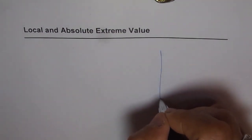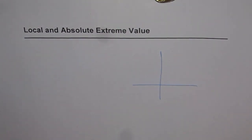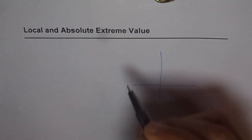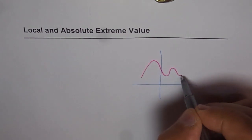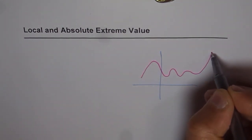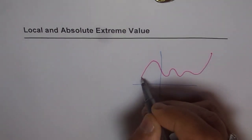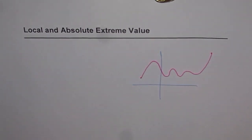Let's discuss local and absolute extreme values — what we mean by them as far as the graph of functions is concerned. Let's sketch one graph and figure out what we are looking for. Let's say we have a function like this with a lot of peaks, and let's say it stops here — that is our function.